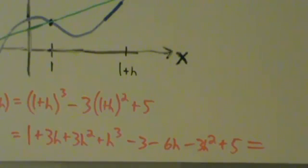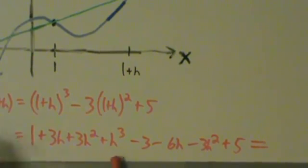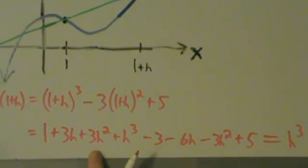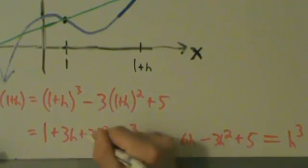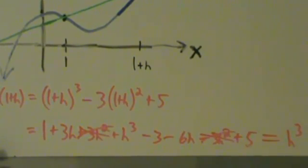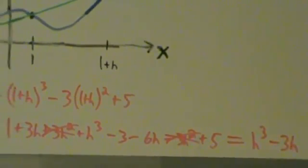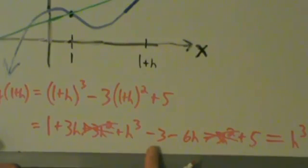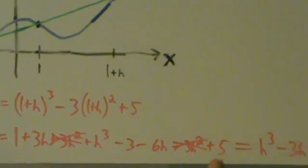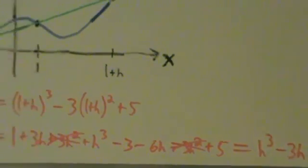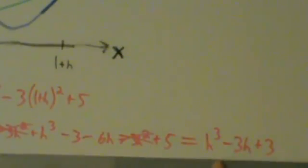Now let's combine all the like terms. The h cubed — there's no other h cubed, so we just have h cubed. Then 3h squared and minus 3h squared cancel. Then 3h minus 6h gives minus 3h. And 1 minus 3 is negative 2, and negative 2 plus 5 gives us plus 3. So g of 1 plus h simplifies nicely to h cubed minus 3h plus 3.